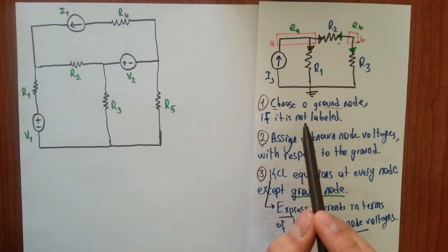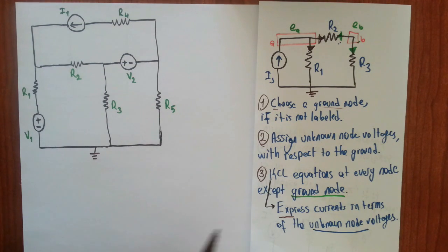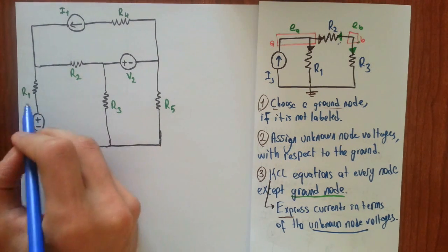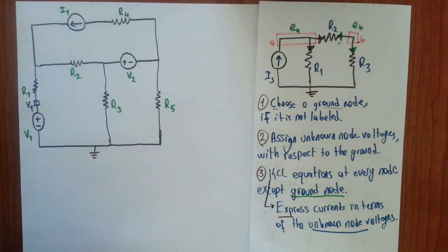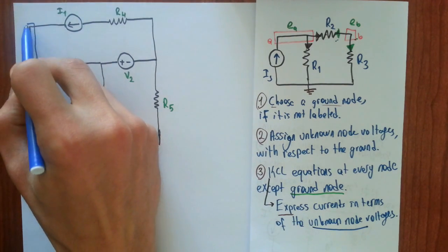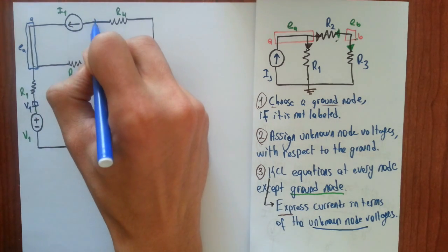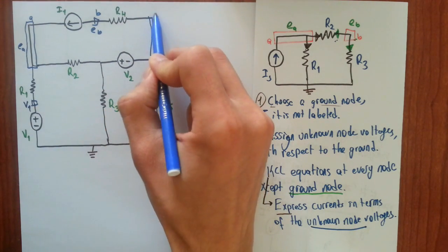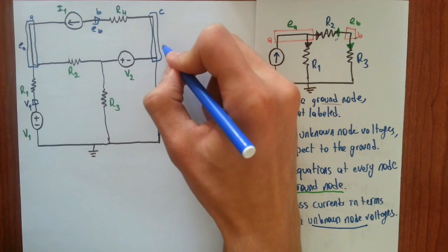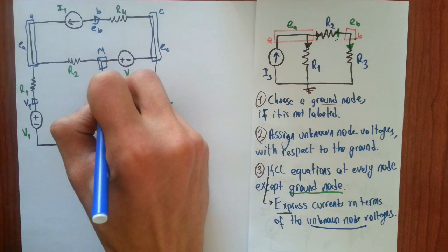First step was to choose a ground node, and I am choosing this node to be the ground. Second step is to assign unknown node voltages. It's obvious that this node has a voltage of V1. Let's call this node as node A and assign EA to this node, this as node B and assign EB, node C and EC, and this node M and assign EM.